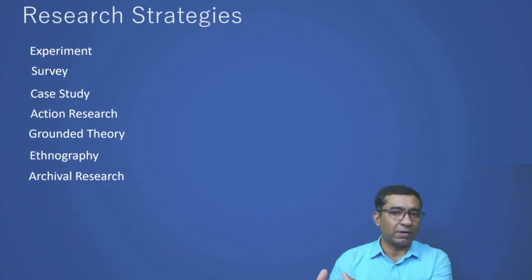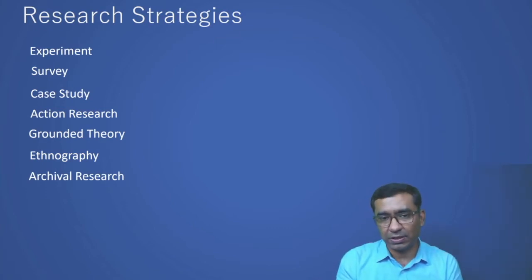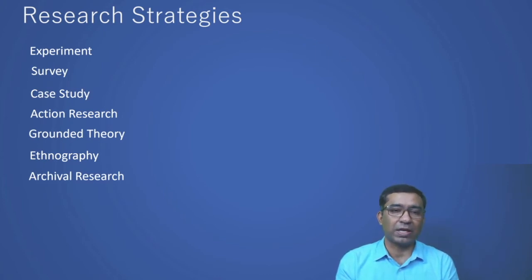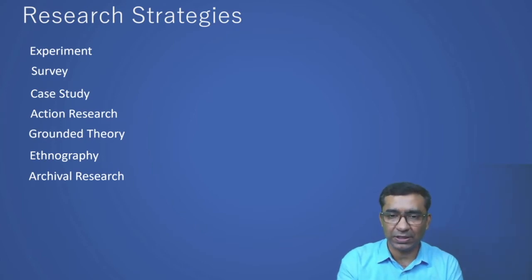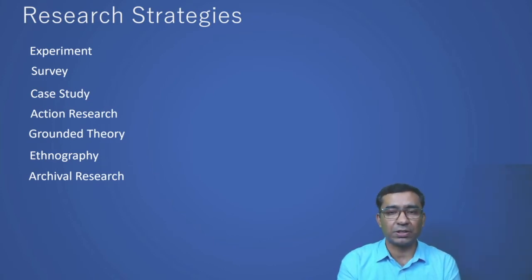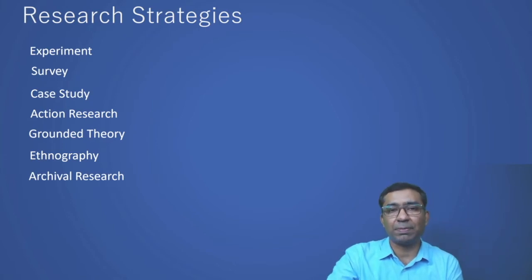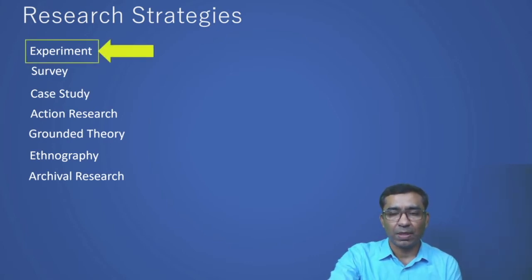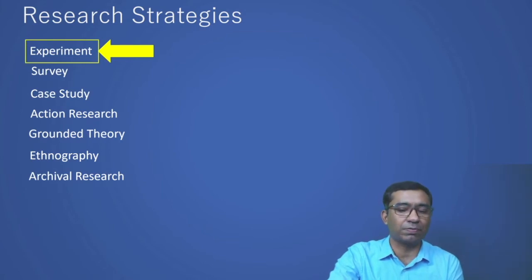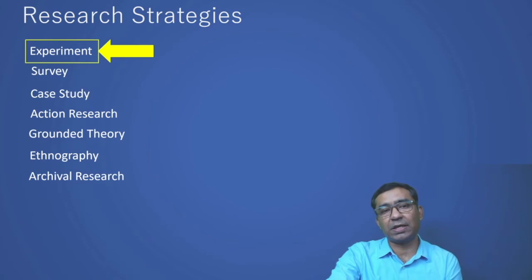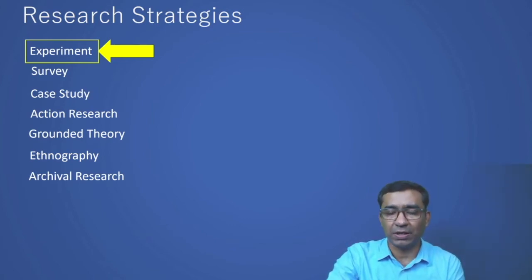Now let's move to the next step: strategies. So after deciding research philosophy and research approaches, we now have research strategies. There are different research strategies available. Why and how you are going to conduct your research is basically your research strategy, and it is a very important decision. In experimental research, we do research based on some already established principles or in a lab setting, defining parameters of constructs and evaluating how changes in one variable affect another — mainly in a controlled environment.